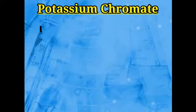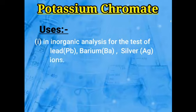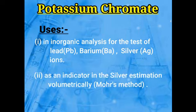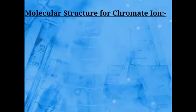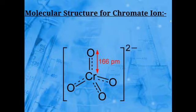Now, the uses of potassium chromate: first, it is used in inorganic analysis for testing lead ions, barium ions, and silver ions. Second, it can be used as an indicator in silver estimation, known as Mohr's method.